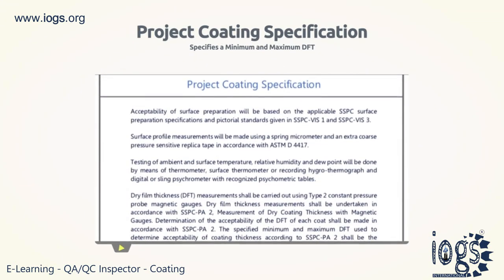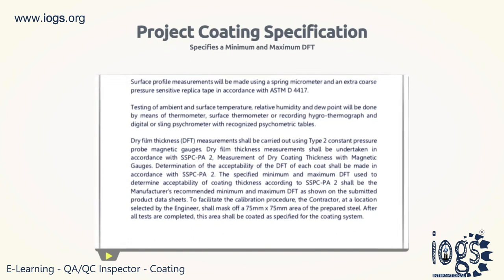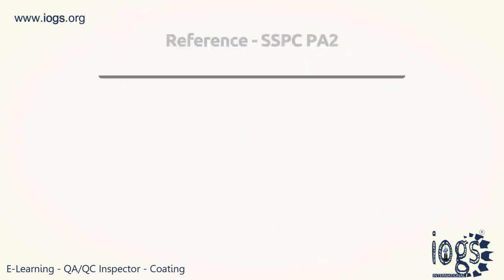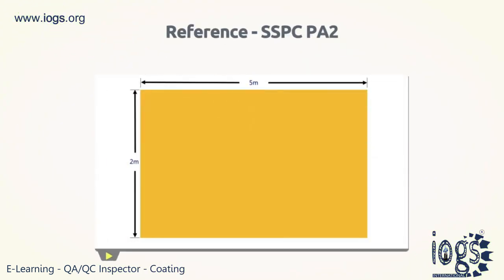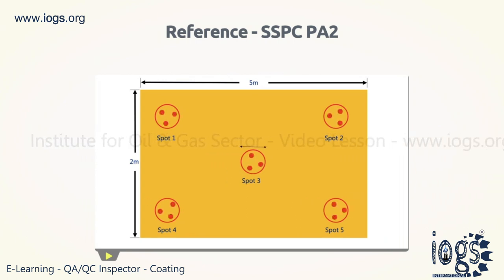The project coating specification will determine the dry film thickness value of a coating system to be measured — both the minimum and maximum coating thickness value. However, if a coating specification specifies a single DFT value, then the specified thickness would be considered as the minimum. If a 10 square meter area of dry film thickness is to be measured, the inspector is expected to select five random spots and measure the same.